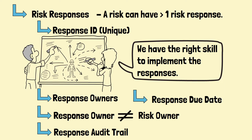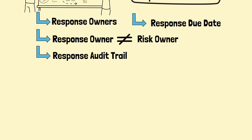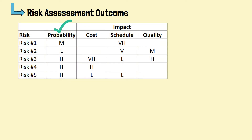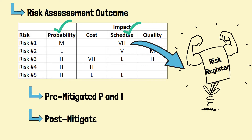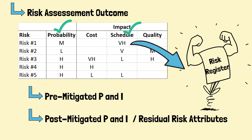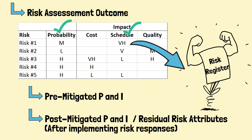Risk response audit trail should be made available for the response owners to update the progress, and the due date of risk response should be specified as well. The risk assessment outcome comprises the probability of occurrence, impacts on different goals, and severity of each risk. This essential information must be captured in the risk register. Sometimes we will capture pre-mitigated and also the post-mitigated probability and impacts. The post-mitigated, or residual risk attributes, are based on the best estimate from the team if the risk responses are implemented.